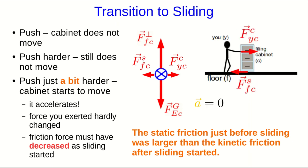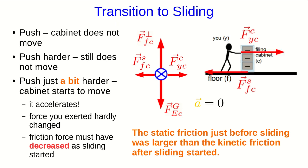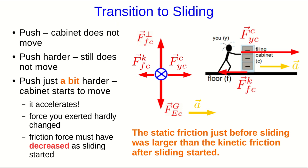That doesn't mean the static friction is always larger than the kinetic friction. Remember, the static friction changes to match the force that you exert on the filing cabinet, and so it can be as small as we want it to be. But if you push harder and harder and harder still, eventually there will be some force where if you push just a tiny bit more, that static friction gets replaced with a smaller kinetic friction, and so the cabinet accelerates.